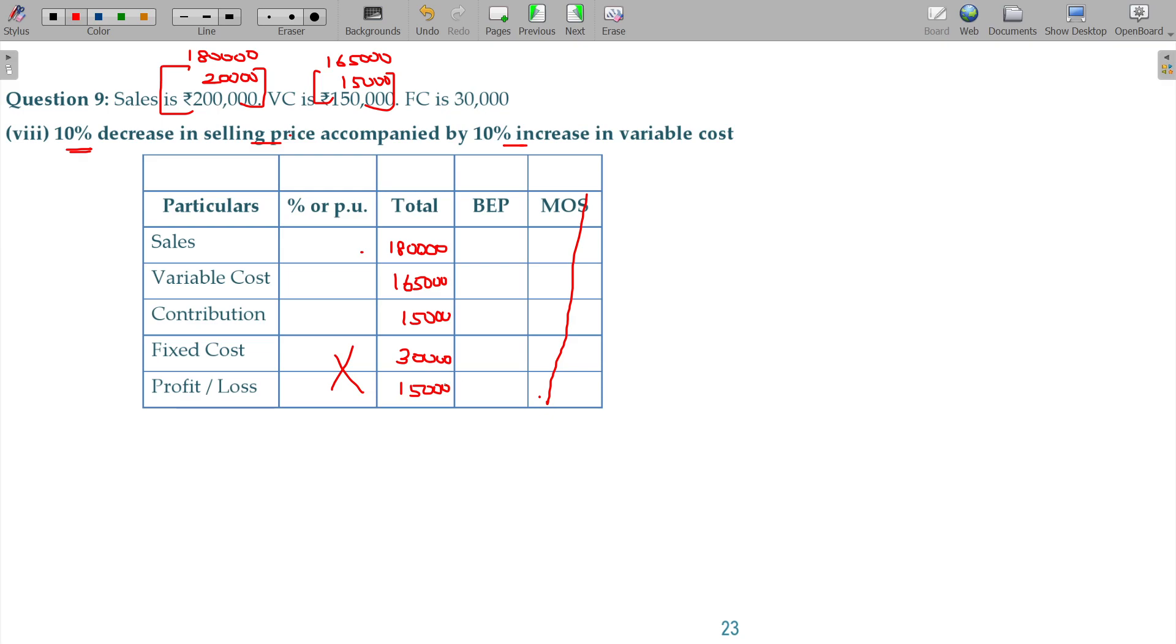Now, at BEP you don't have profit, so fixed cost being 30,000. That fixed cost becomes contribution for the BEP. 15,000 contribution, 30,000 fixed cost, then 3,60,000 should be the sales.